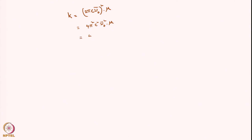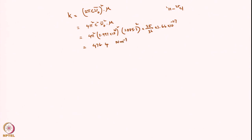So k = 4π² × (2.997 × 10¹⁰)² × (2885.1)² × μ. For H¹Cl³⁵, the reduced mass μ = (1 × 35)/(1 + 35) × 1.66 × 10⁻²⁷ kg = (35/36) × 1.66 × 10⁻²⁷ kg. Solving this gives a force constant of 476.4 N/m.